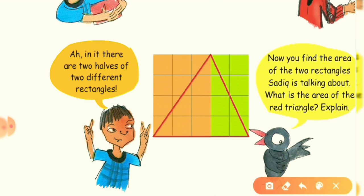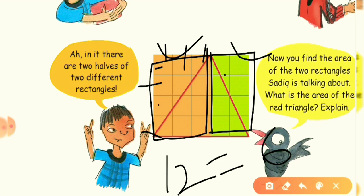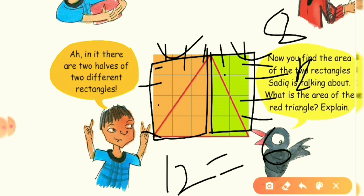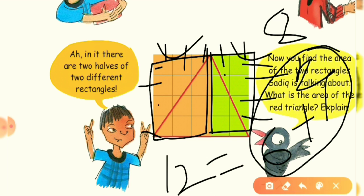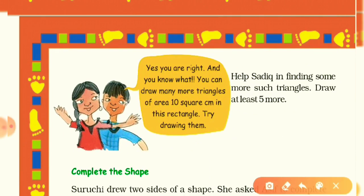Here is another way to find the area of the red triangle. The rectangle is divided into orange and green sections. Count the orange squares: 1, 2, 3, 4 and 1, 2, 3 — 12 total; half of 12 is 6. Count the green rectangle squares: 1, 2 by 1, 2, 3, 4 = 8; half of 8 is 4. Add the two halves: 6 + 4 = 10 square centimeters — confirming the red triangle's area is 10 square centimeters.